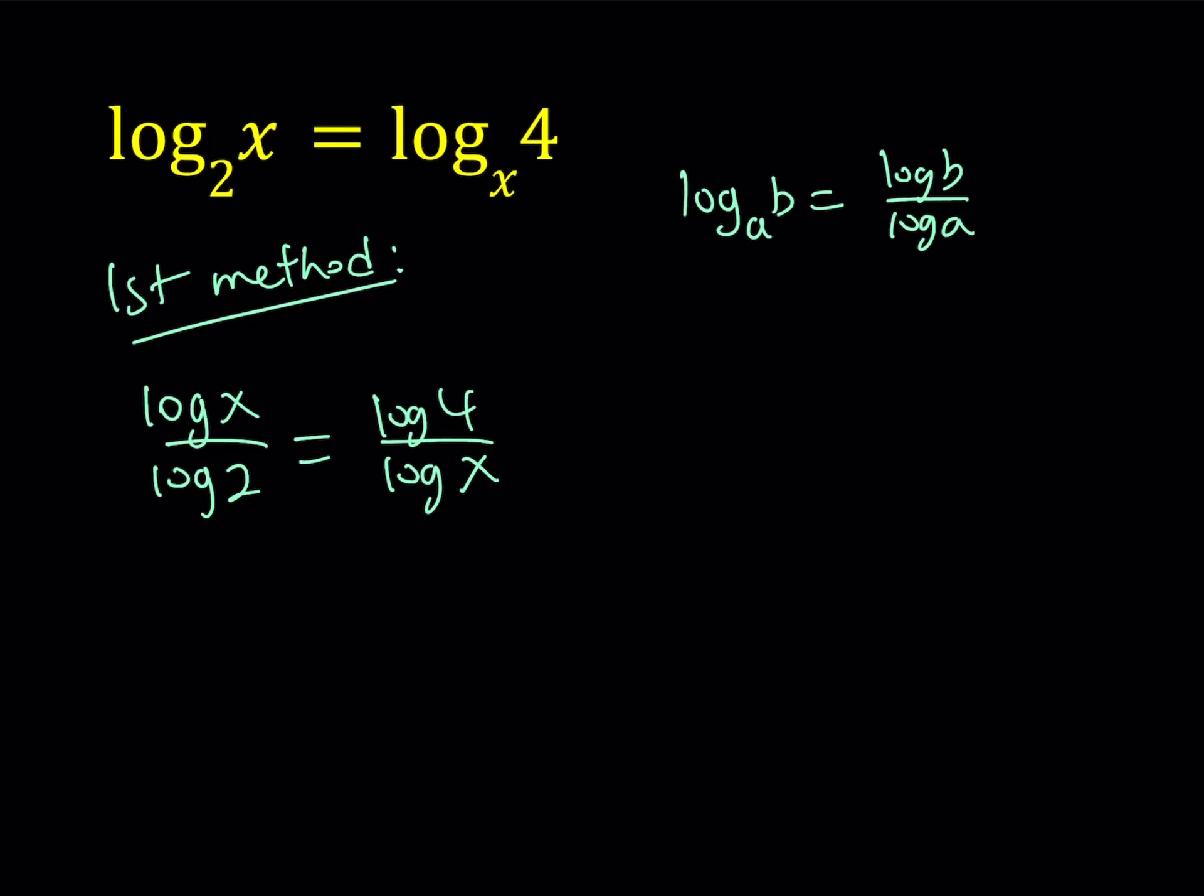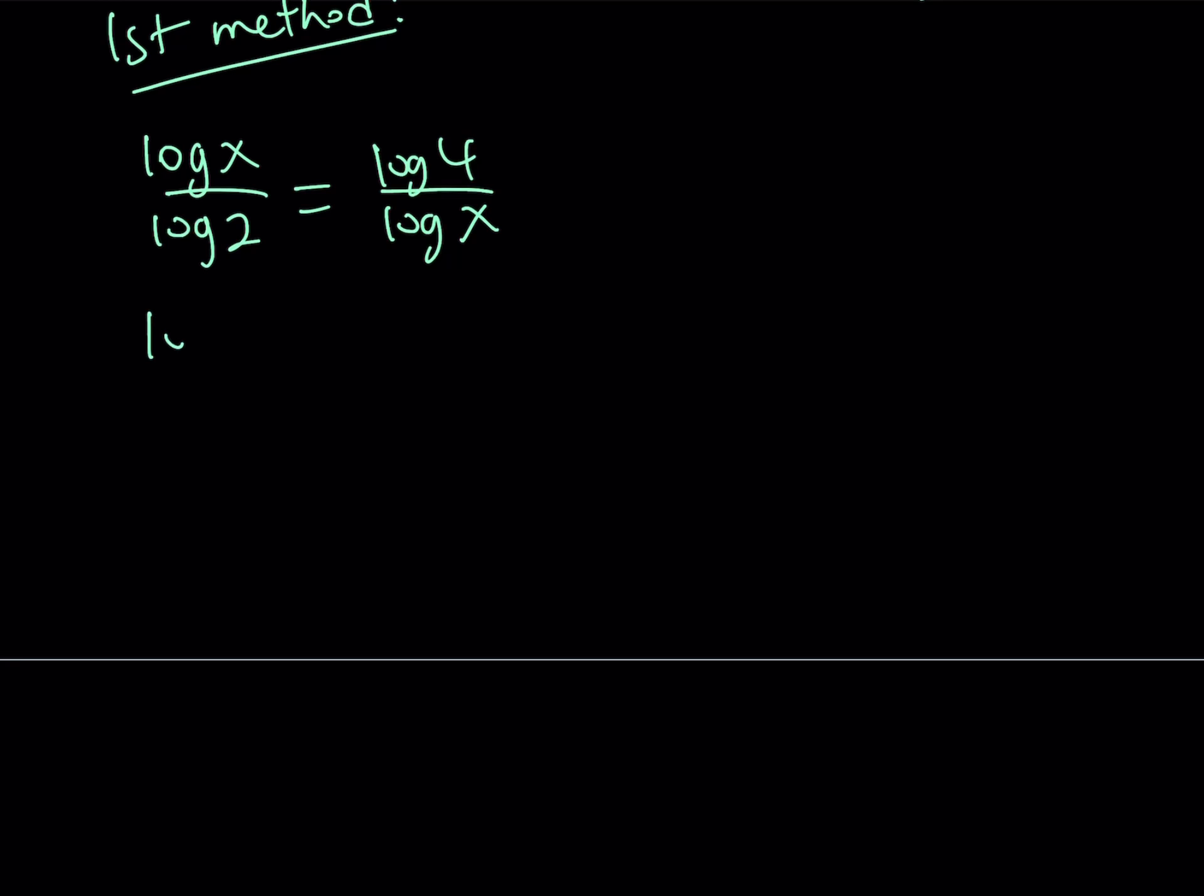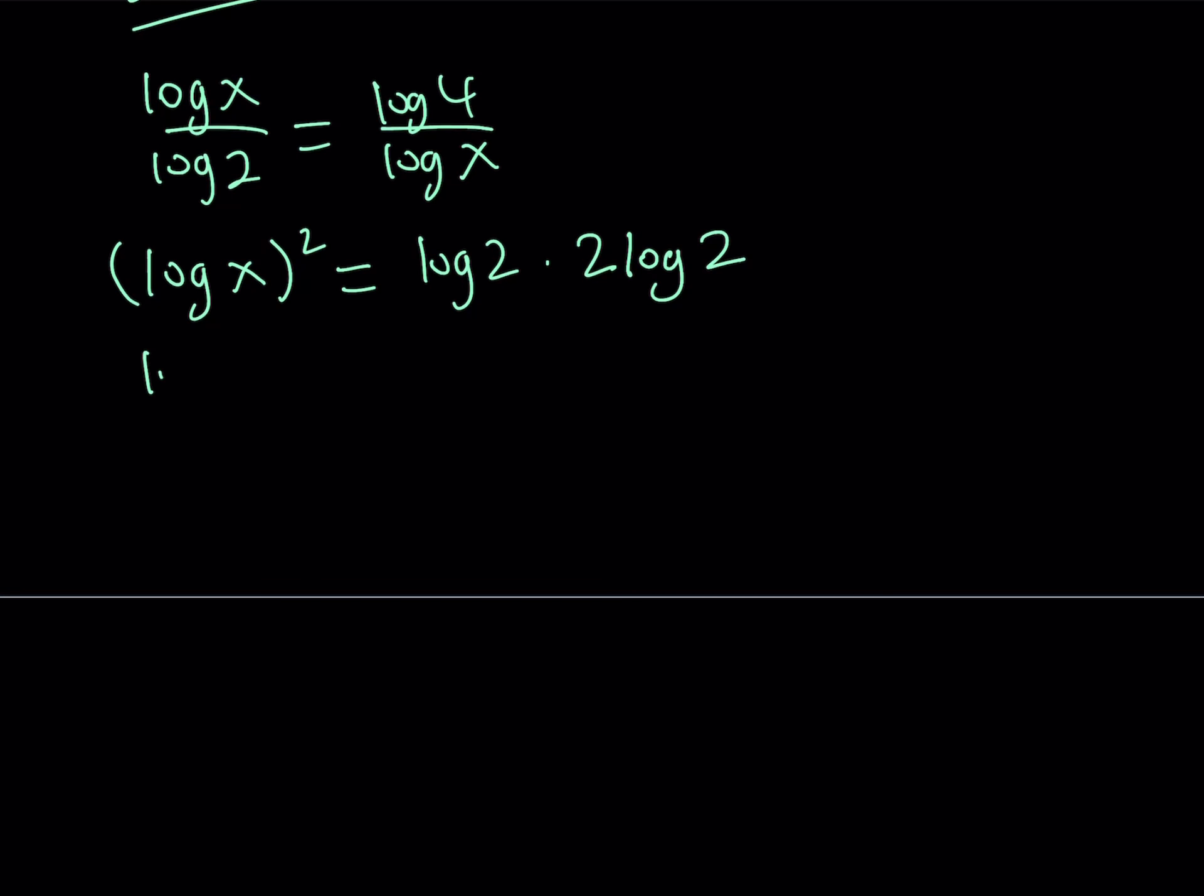And my goal is to solve for x, so let's go ahead and cross multiply. We get log x quantity squared equals log 2 times log 4, which I can write as 2 times log 2. From here, I get 2 times log 2 squared.